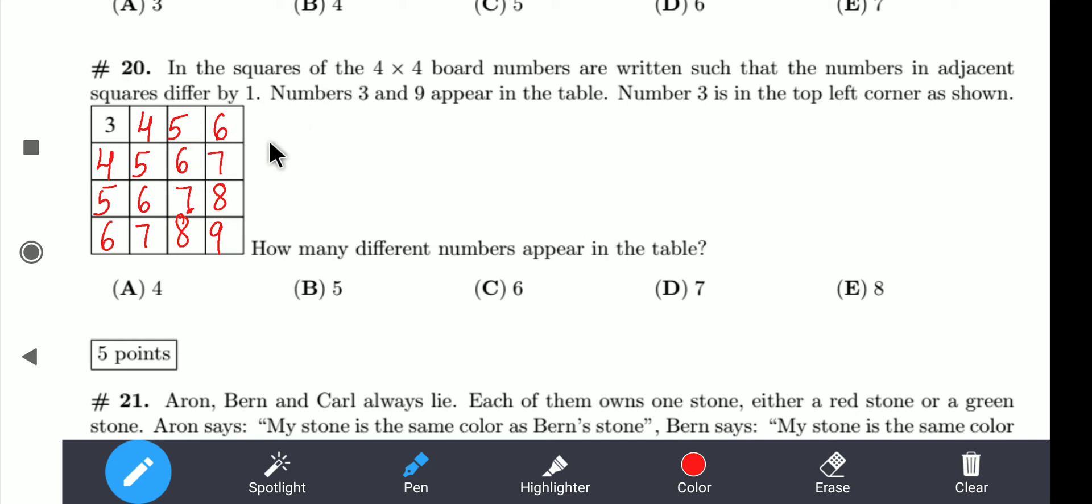So how many different numbers are appearing? So we have 3, 4, 5, 6, 7, 8, and 9. So we have 1, 2, 3, 4, 5, 6, 7. So my answer is option number D, 7.